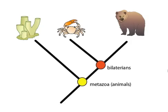This next tree is pretty much the same as the first one, except that we recognize that the crab plus bear lineage is a new group of its own, a subset of animals called bilaterians.